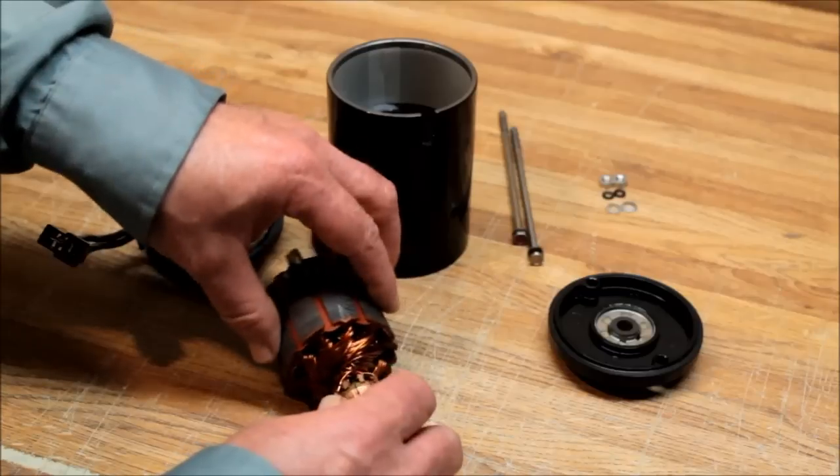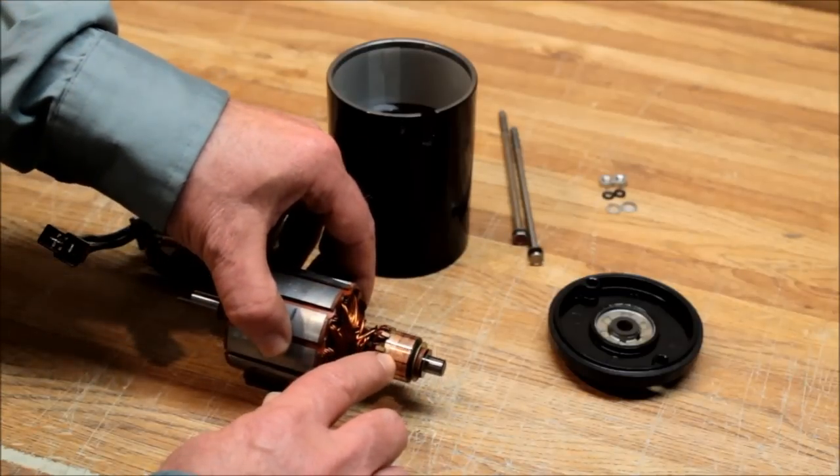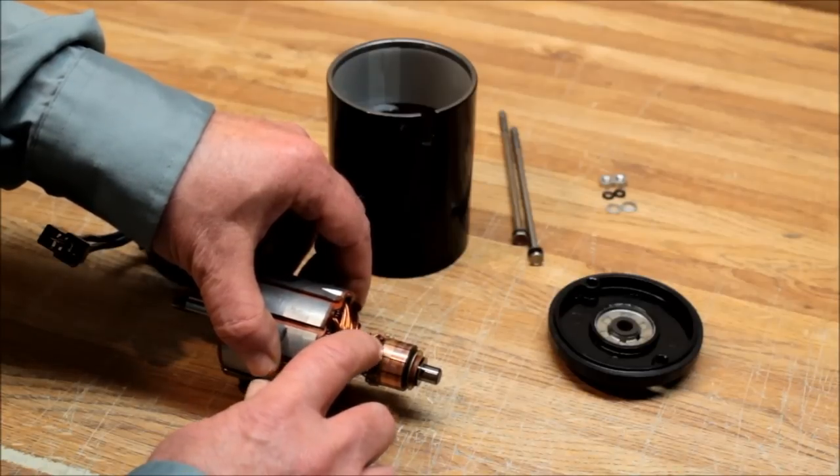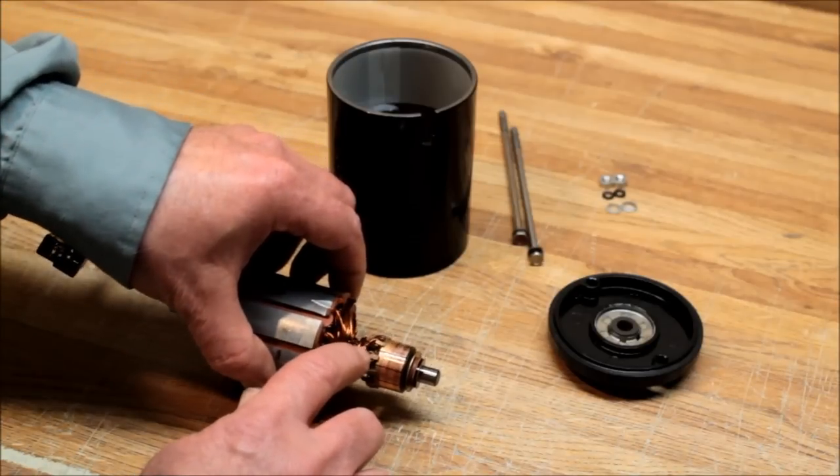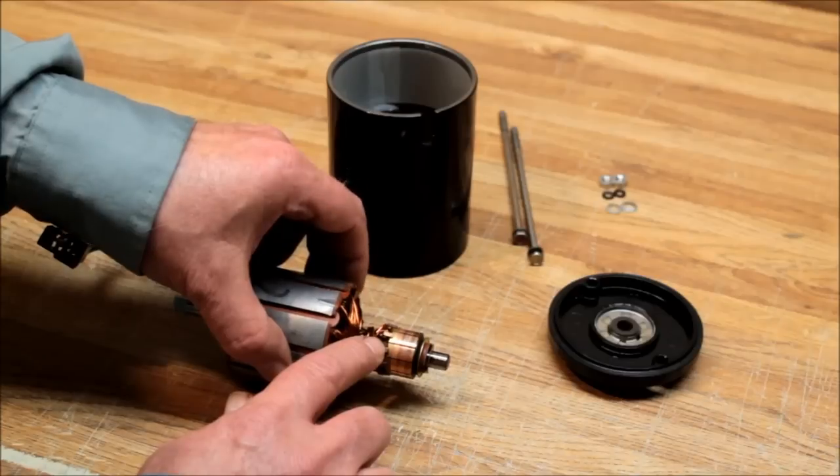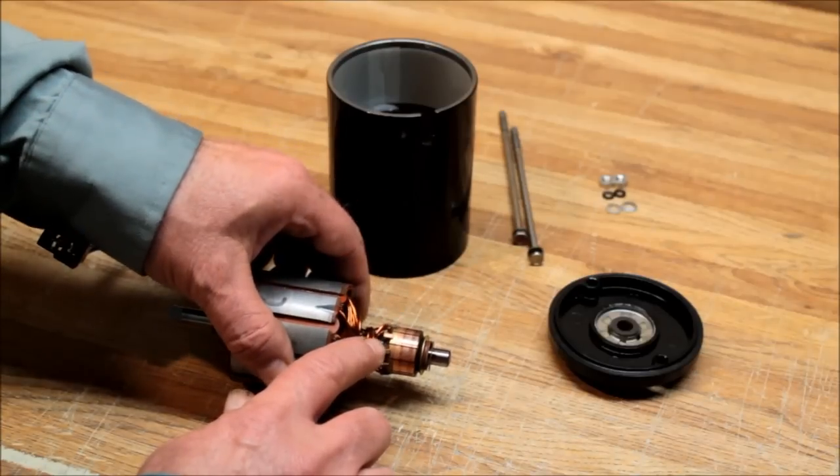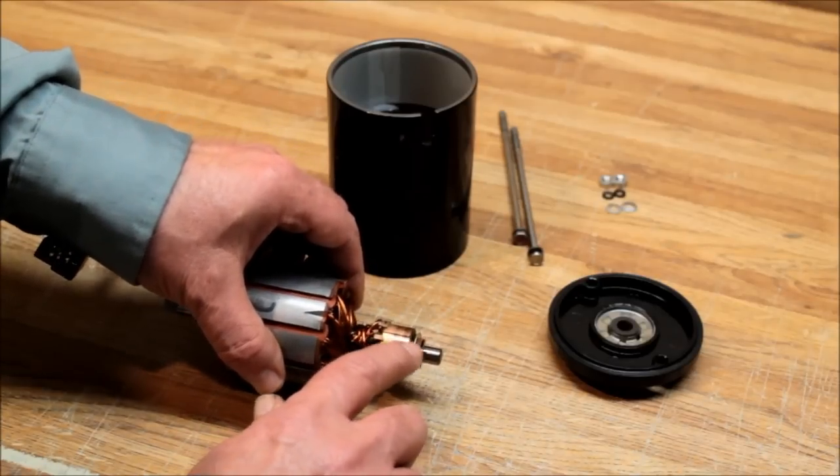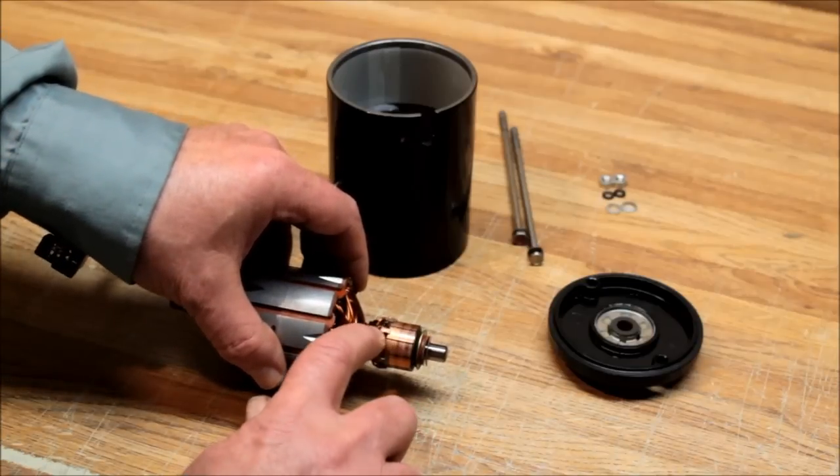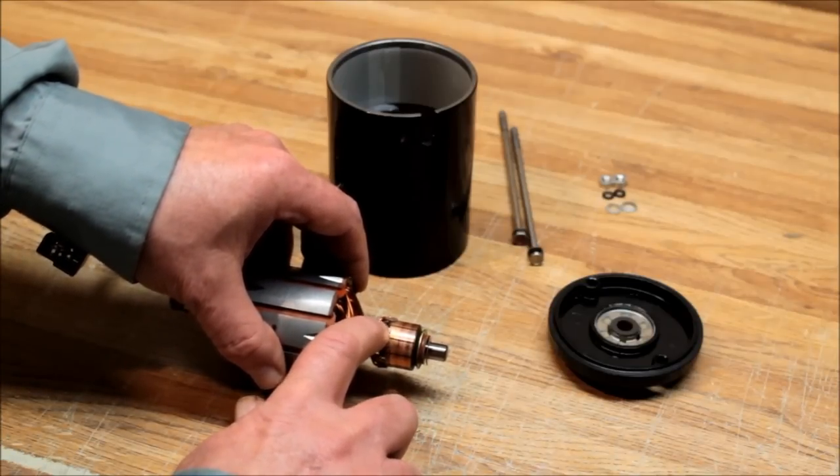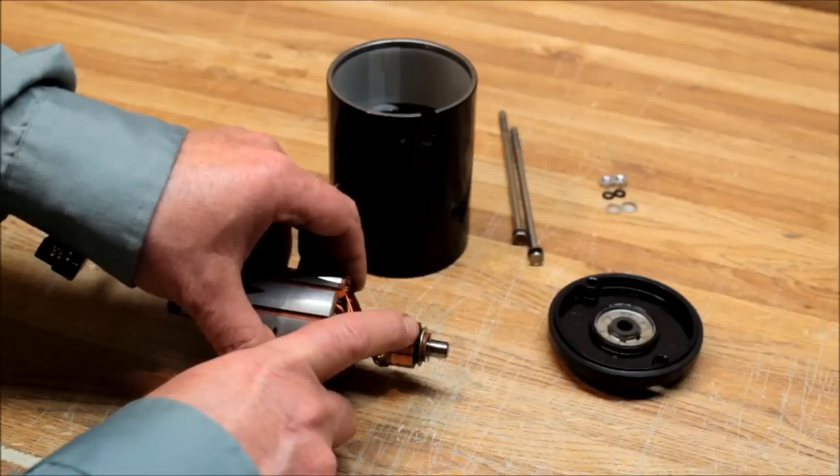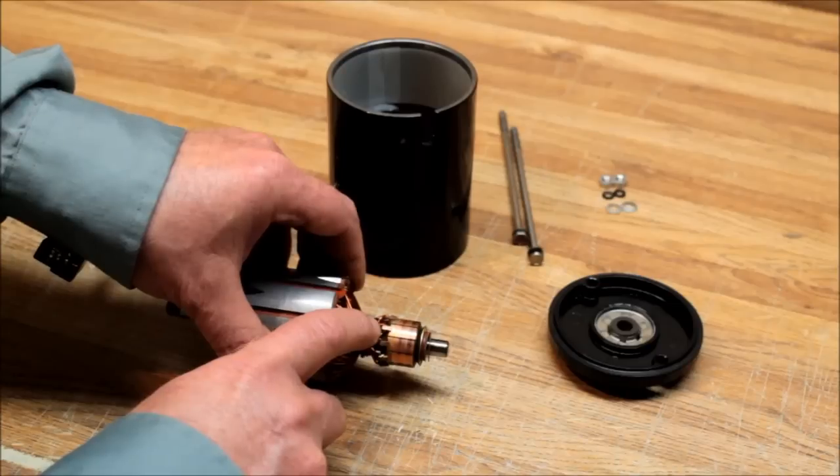This end of the armature, the commutator's got good thick copper on it. The leads for the armature are welded in here. Some will be soldered, and the soldered ones are really going to be your cheaper ones. The solder will heat up and sling out of there. If you're troubleshooting these and find one of these bars is black, check this lead. A lot of times these leads will potentially get loose and the bars will turn black.